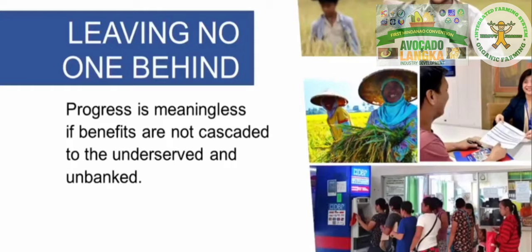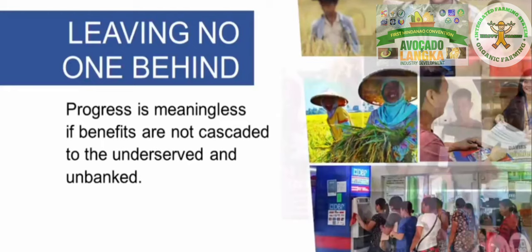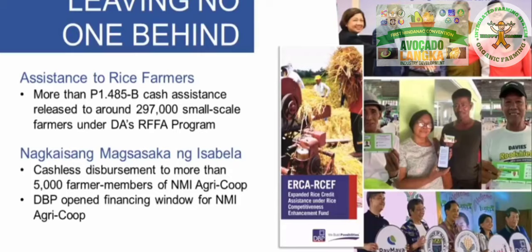DBP is bent on exhausting all means to enhance access to credit by enterprising Filipinos, particularly those engaged in priority agricultural value chains and those that promote business partnerships between enterprises and farmers. For DBP, growth and progress are meaningless if their benefits are not cascaded to those who need them most — the underserved — and this motivation pushes DBP to facilitate equitable access to programs and services for financial inclusion.